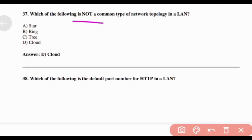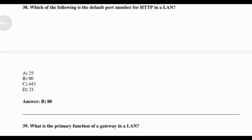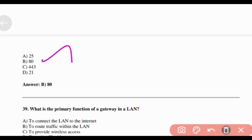Which of the following is NOT a common type of network topology in a LAN? Answer: Option D — Cloud. Which of the following is the default port number for HTTP in a LAN? Answer: Option B — 80.